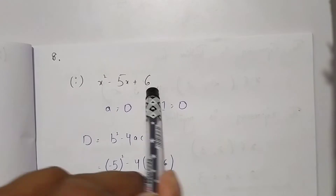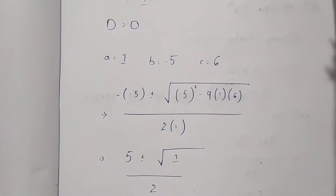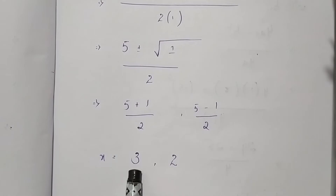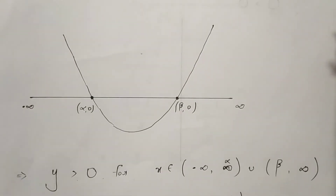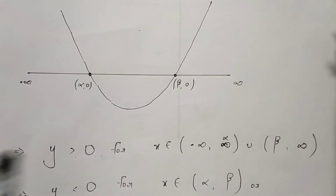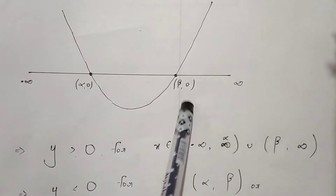On finding the roots of this given equation, we use the formula: (-b ± √(b² - 4ac)) / 2a. On solving, we get two roots: the first is 2 and the second is 3. So the values of alpha is 2 and beta is 3.